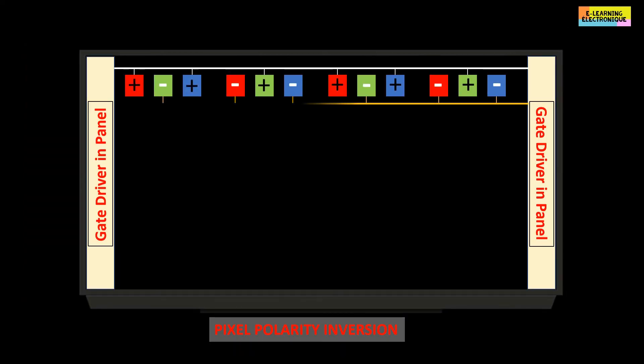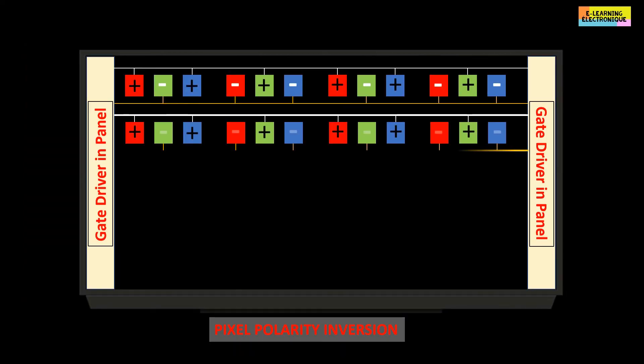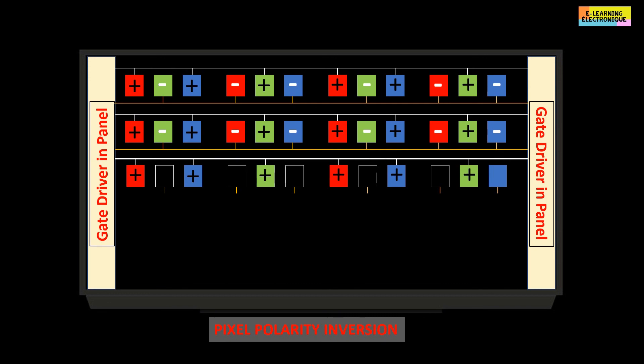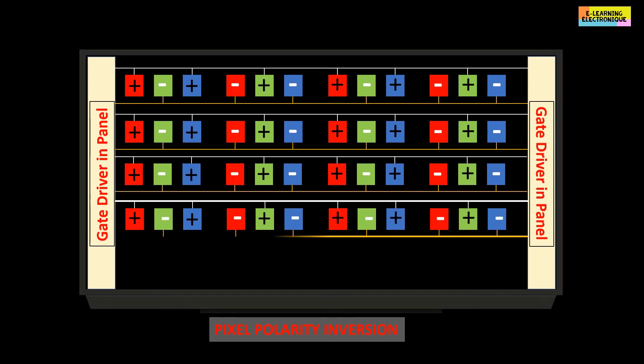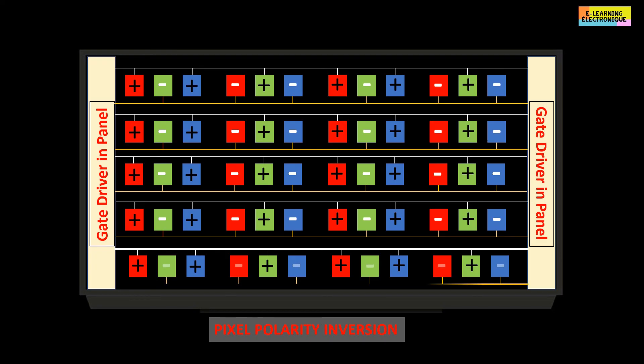Here is an example of a double scan that reverses the polarity between each pixel. In one direction some pixels will have a positive polarity and in the other direction the polarity will be negative. At the next frame, the polarity for each line can be reversed. This technique prevents the liquid crystal from freezing and losing its optoelectrical properties.